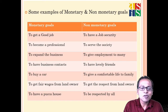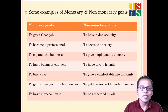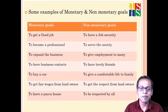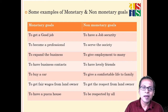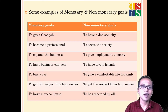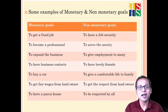Consider a worker who does not own land and works under a landlord. He might want more payment — that is a monetary goal. But at the same time he also wants respect from the owner, which is a non-monetary goal. Generally in life we have a mix of goals — some relating to money and some not.